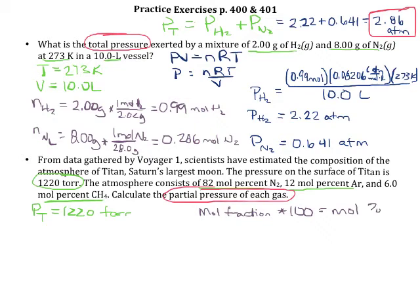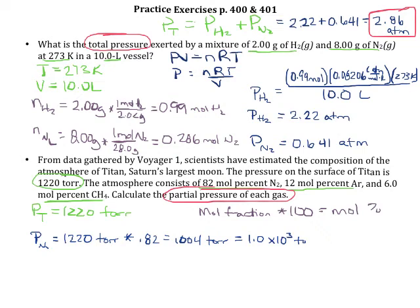The partial pressure of each gas is just its mole fraction times the total pressure. So the partial pressure of nitrogen equals the total pressure of 1,220 torr multiplied by its mole fraction of 0.82 — meaning 82% of the 1,220 torr is due to nitrogen. That gives us 1,004 torr, which we round to two significant figures: 1.0 × 10³ torr.